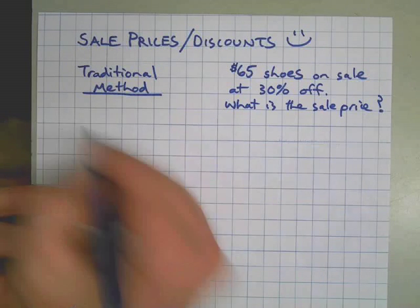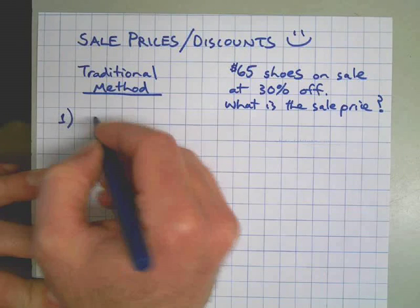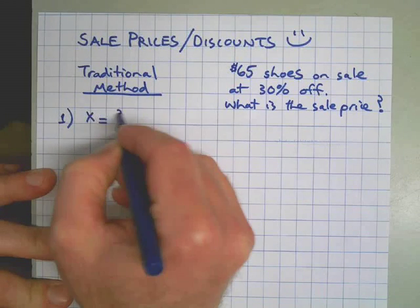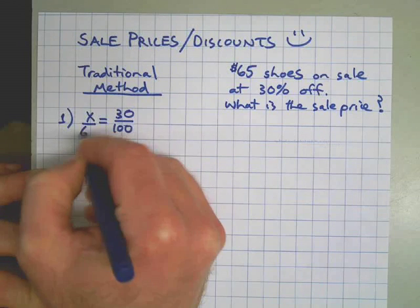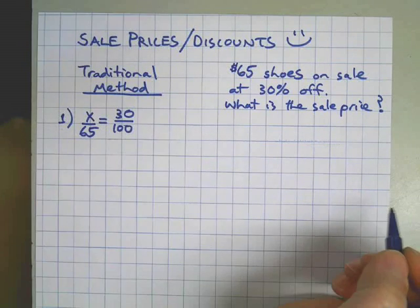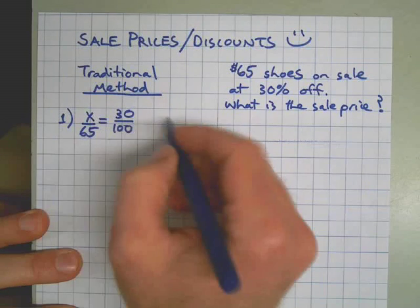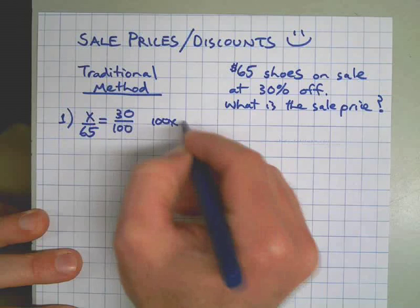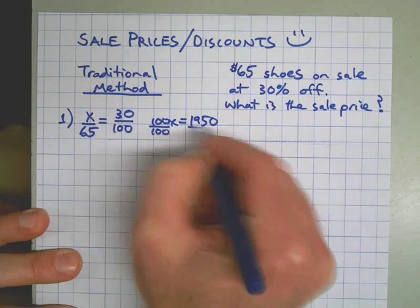Okay, here's the traditional method. Step one is we go: what is 30 percent of 65? Refer to my proportion video for this technique. Here's our setup: we cross multiply, divide both sides by the coefficient of x, and we get $19.50.